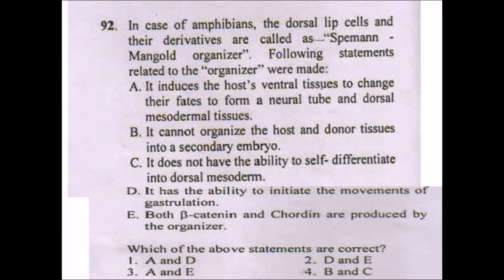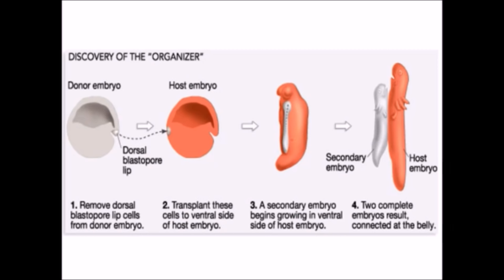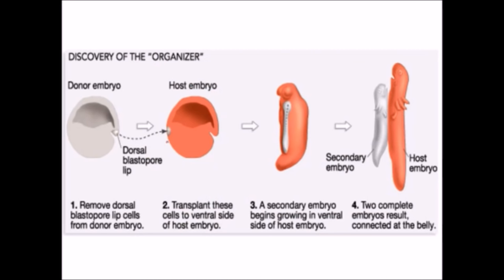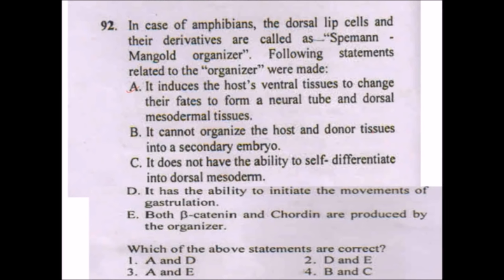First option: it induces the host ventral tissues to change their fate to form neural tube and dorsal mesodermal tissue — this has been observed, so this is right. Second: it cannot organize host and donor tissues into a secondary embryo — false, they have organized into a secondary embryo. Third: it does not self-differentiate into dorsal mesoderm — also not true. Fourth: it has the ability to initiate the movement of gastrulation — correct. So options A and D are correct.